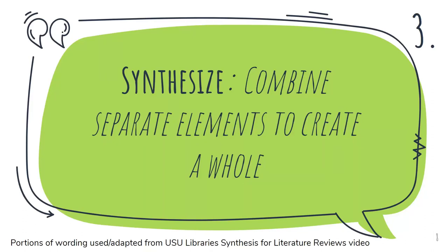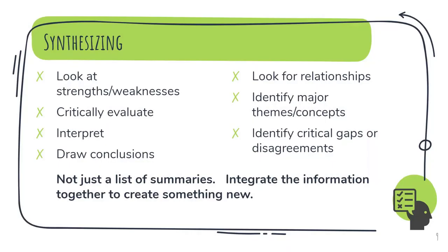After thorough examination of your resources, you'll then start to put your literature review together. Synthesizing — combining separate elements to create a whole — will be important as you write. Within the literature review, synthesizing is taking different pieces of research from multiple sources to form a new picture. Synthesis goes further than just summarizing or comparing and contrasting different articles and resources. You aren't just listing and direct quoting different authors. You must make conclusions about the main themes you see emerging, or critically evaluate how the authors came to their conclusions, or determine where you see gaps that your research would fill and place you and your ideas within the scholarly conversation surrounding your topic. It's not just a list of summaries, but an integration of the information to create something new.